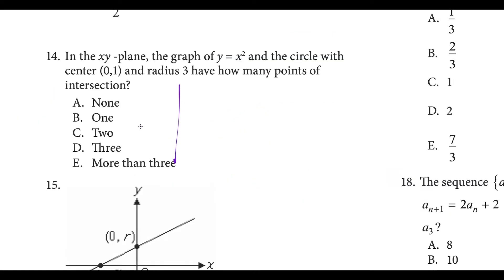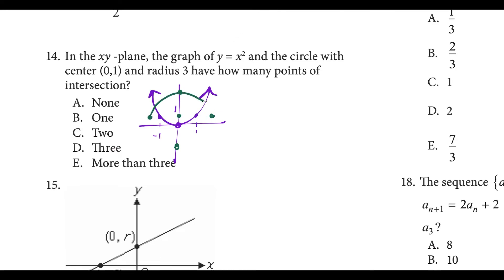Question fourteen: we draw the graph of y equals x squared and a circle with center at (0, 1) and radius 3. The circle goes below the vertex — down 1, 2, 3 — and extends 3 units in every direction. When the parabola reaches a height of y equals 1, it's at x equals 1 and x equals negative 1. Going out 3 from center definitely passes the parabola. Connecting the circle, you can see it hits the parabola twice. So we're going with choice C.